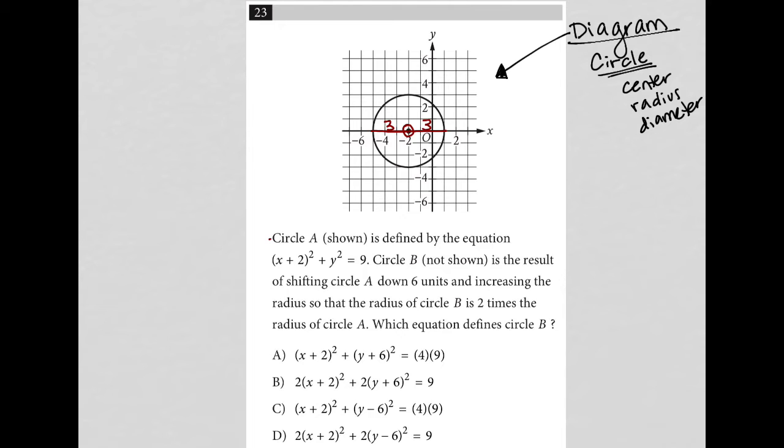So let's see what this question is asking. The question says circle A shown is defined by the equation x plus 2 squared plus y squared equals 9. So I could have also gathered everything that I just said from this equation without even having to have the visual. And just as a little bit of review, that's because the formula for a circle is x minus h squared plus y minus k squared equals r squared.